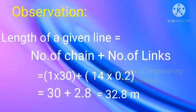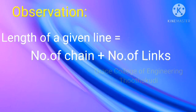Observation: Length of a given line equals number of chains plus number of links. Using a 30 meter chain, the calculation is 1 times 30 plus 14 times 0.2, where 0.2 is the link length. The answer is 30 plus 2.8 equals 32.8 meters. This is the length of the given line.